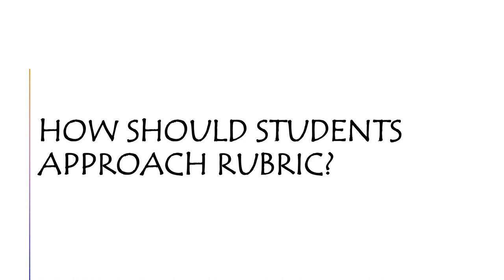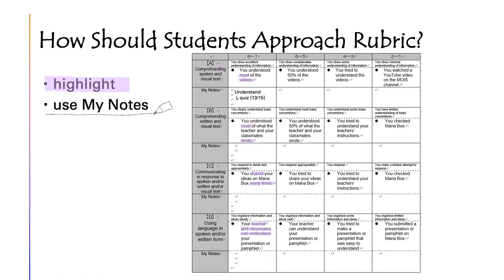Last, how should students approach the rubric? I think there are two points. Point one, use a highlighter. You should highlight things like important parts and the words that you don't know.